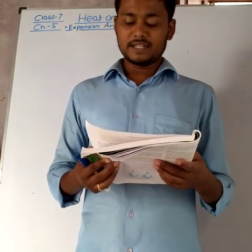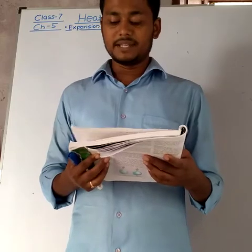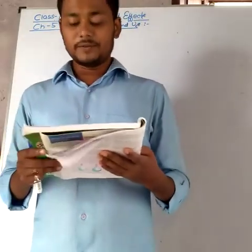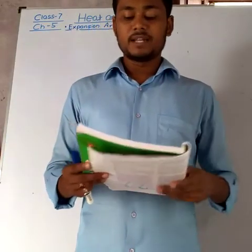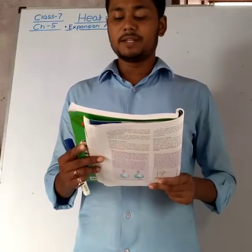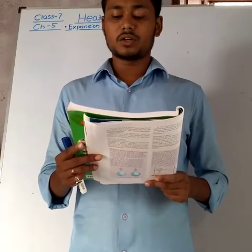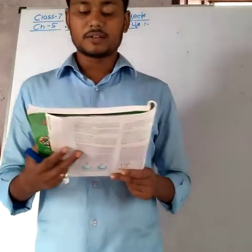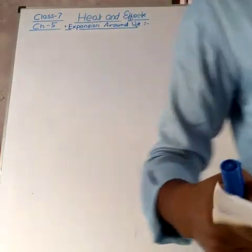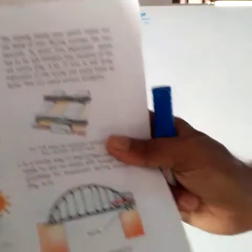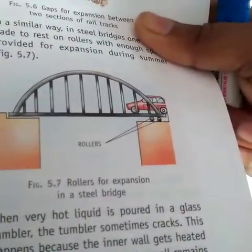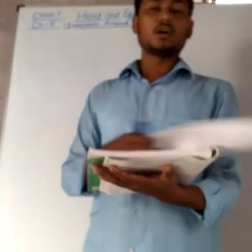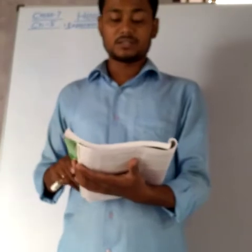Similarly, for rollers for expansion in a steel bridge — please see figure 5.7 — in a steel bridge one end is made to rest on rollers, with enough space provided for expansion during summer. Please make a short note on all these examples of expansion around us, whether useful or harmful.